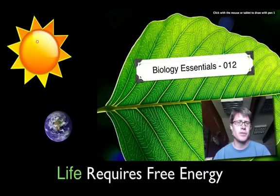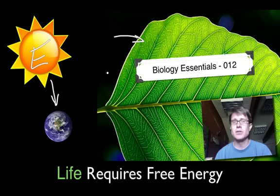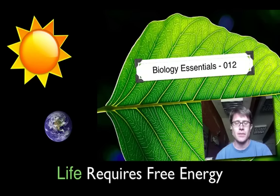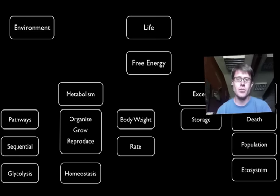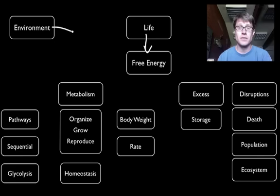On our planet we get free energy from the sun — a constant supply of energy in the form of sunlight. Plants are able to use that to convert that energy into sugars, which we then break down. If it weren't for the sun and that available energy, life on our planet wouldn't exist the way it does today. Life requires free energy, and we get it from the environment, mostly from the sun.